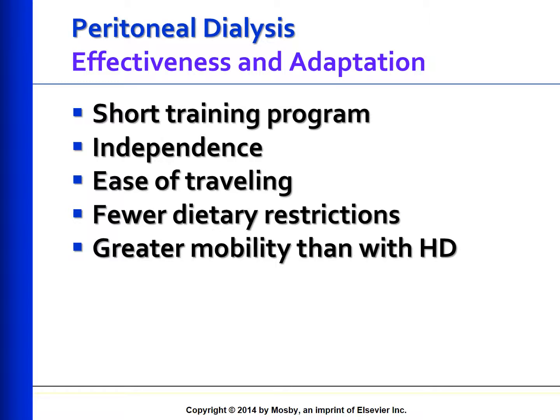The effectiveness and adaptation of peritoneal dialysis: Learning the self-management skills necessary for PD is usually accomplished in a 3 to 7 day training program. The primary advantage of peritoneal dialysis is its simplicity as a home-based program, allowing the patient to be independent and in control. The setup is easy, enabling a normal life with ease of travel and greater mobility than hemodialysis. There are fewer dietary restrictions, and PD is especially indicated for individuals with vascular access problems or who respond poorly to the hemodynamic stresses of hemodialysis.